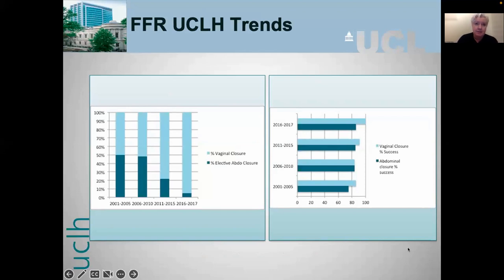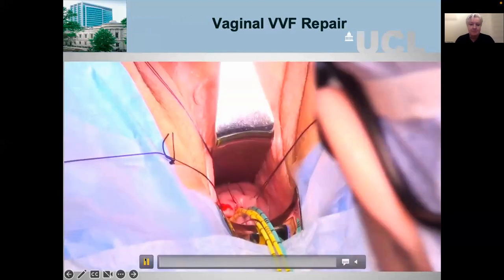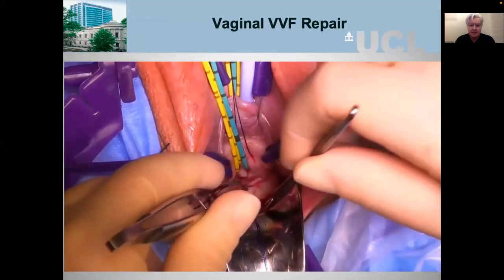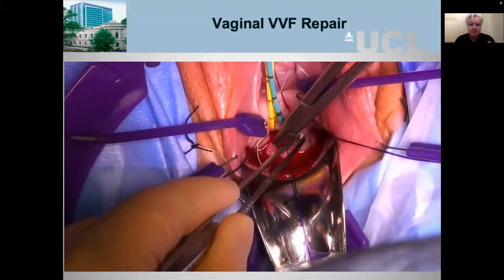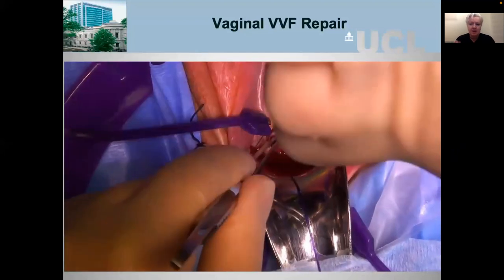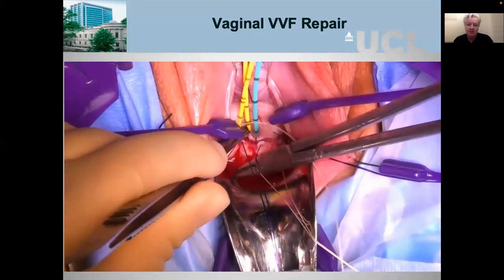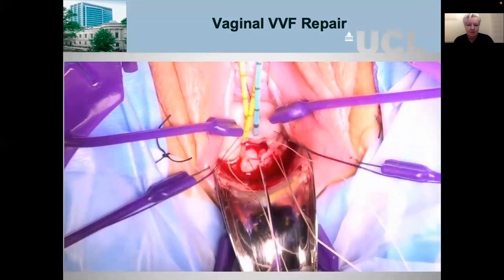When I started at UCLH in 2002 we repaired about 50% of fistulae vaginally and 50% abdominally. Now we repair 95% vaginally, and in that time the number of fistulae referred annually has trebled, with year-on-year successful closure rates improving for both approaches. In a typical vaginal repair, I use a self-retaining retractor with elasticated stays, a weighted Sims speculum for view, and navy blue Prolene 3-0 to pull the fistula towards me. I start circumscribing from below so blood runs away from me.